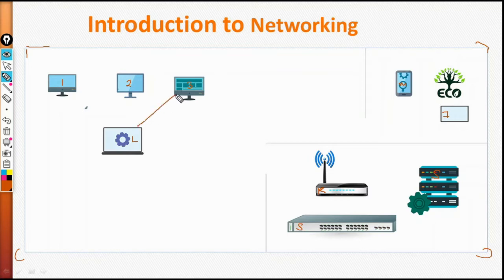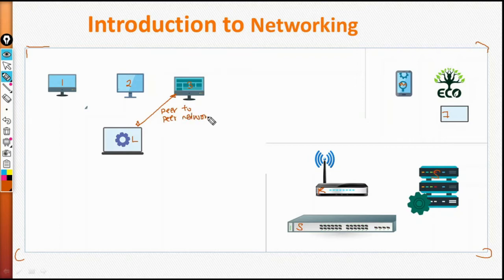Let's start with the basic form of networking. If you want this laptop to communicate with this desktop, we can connect the two using a cable, and this type of network is called a peer-to-peer network. You cannot go connecting these devices using a cable because a laptop only has one or two ports.